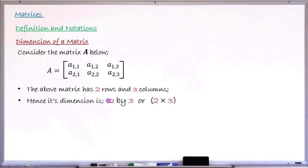The dimension of this matrix is two by three — written as 2 × 3. The number of rows is written first, followed by the number of columns. This is what we mean by the dimension of a matrix: it tells us how many rows and how many columns are in that matrix.